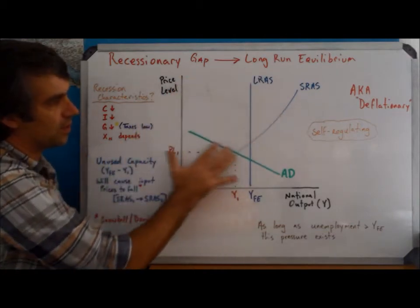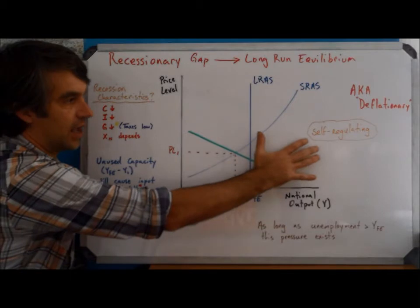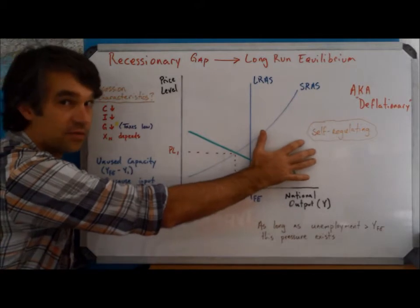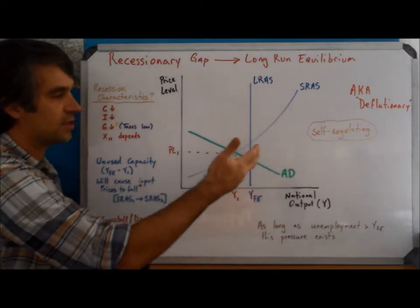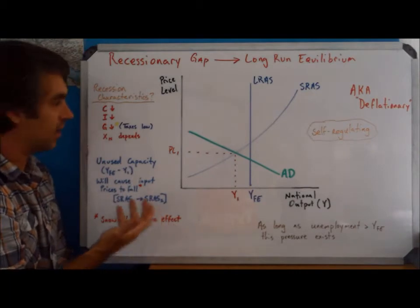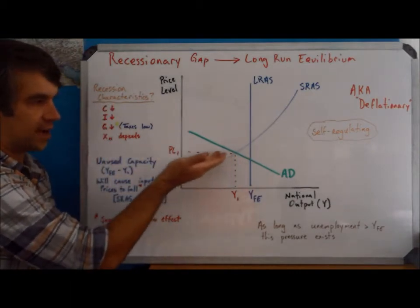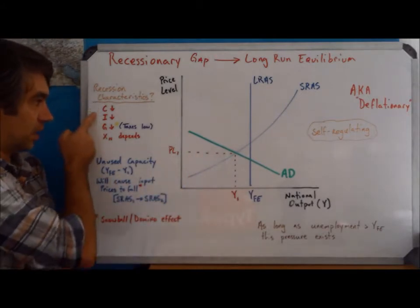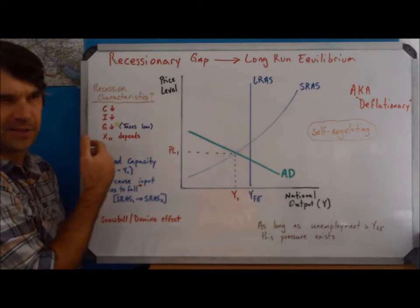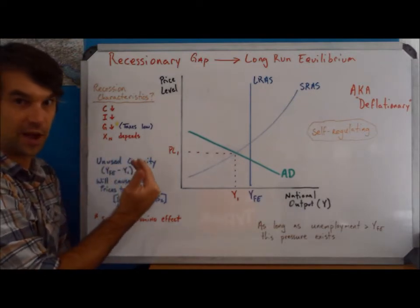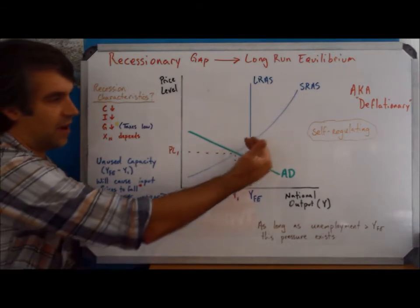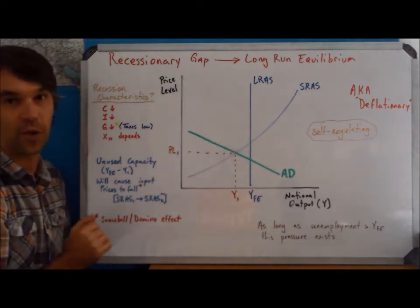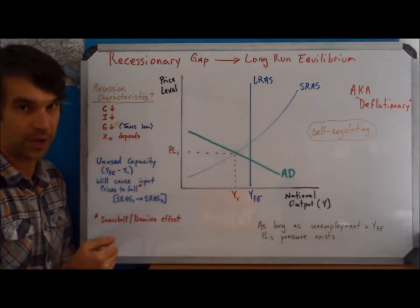So remember we're looking at the monetarist or neoclassical perspective here, and for them, the whole idea is leave it alone, laissez faire, because it will take care of itself. It's self-regulating. So, the question is, how is it going to self-regulate? Well, we've just shown that the problem here is that aggregate demand is too far to the left. It's not where it should be because of decreases in C, I, and G. So if it's the problem, it's not going to just turn around and fix itself. If aggregate demand has decreased to here, there's no reason for it to stop decreasing and just to go back where it was.